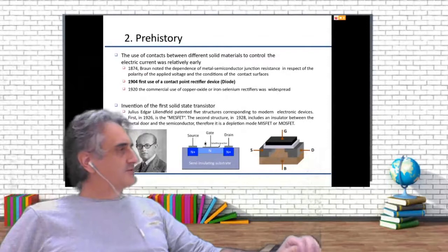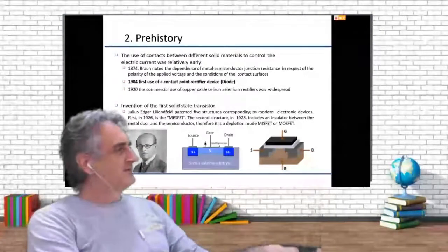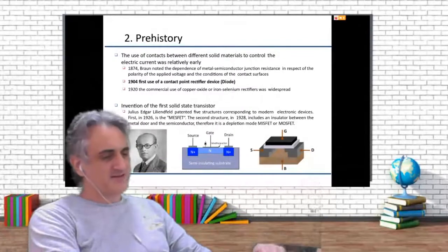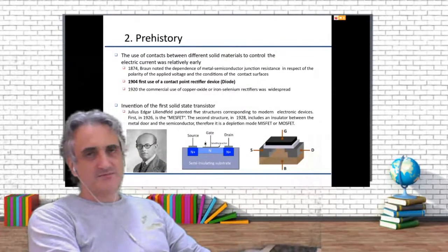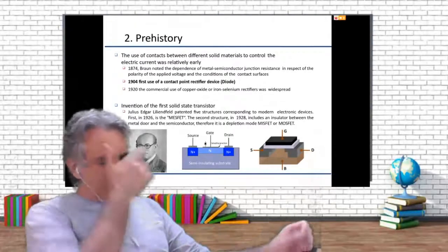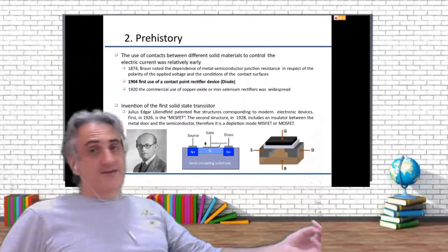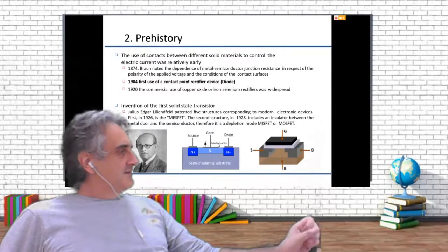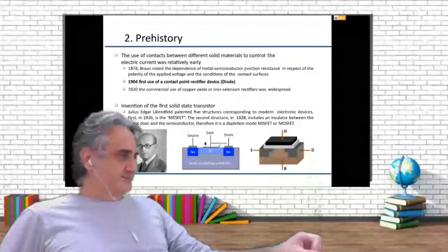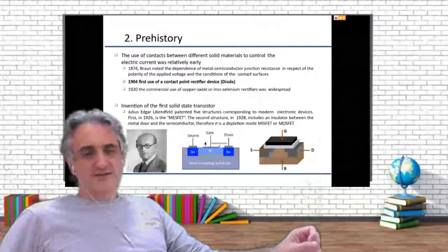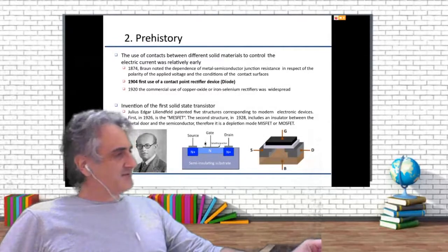So people were thinking to use something that was discovered many years ago, more or less at the beginning of the century — more or less at the same time that Fleming discovered or patented the thermionic valve. They were playing with something called solid state. Solid state is another way of saying semiconductors, or at least something similar.